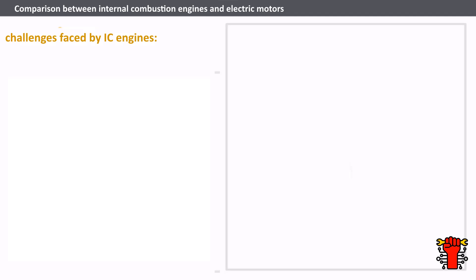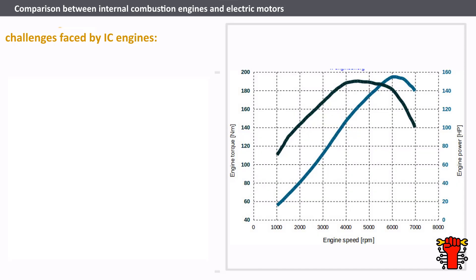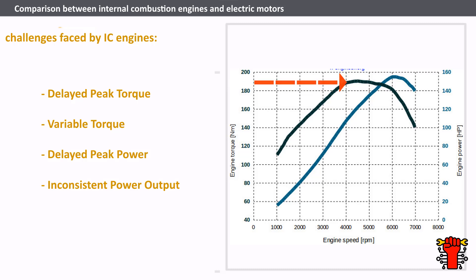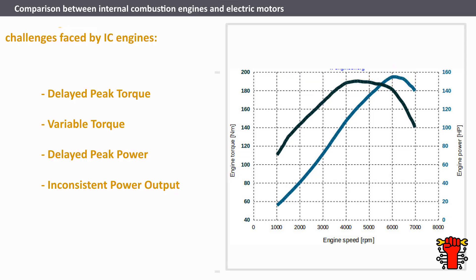Moving on to the comparison between internal combustion engines and electric motors, we identify key challenges faced by IC engines. Delayed peak torque: IC engines achieve peak torque only at higher RPMs, impacting acceleration. Variable torque: the torque fluctuates, hindering consistent performance during acceleration. Delayed peak power: achieving maximum power requires running the engine at high RPMs. Inconsistent power output: the power achieved is not constant, diminishing performance over time. IC engines also struggle with efficiency and fuel consumption, often operating within a limited sweet spot of efficiency.